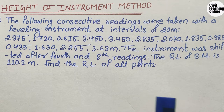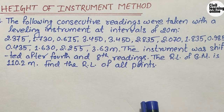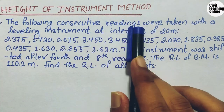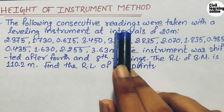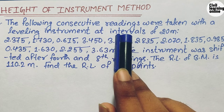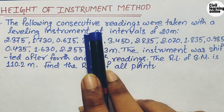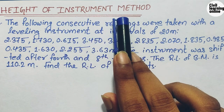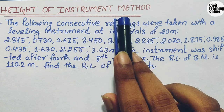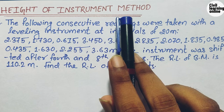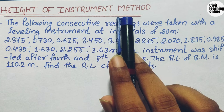Hello viewers, welcome to CV Learning Online. Today in this video I will be solving a numerical based upon the height of instrument method. Previously I have made a video about the rise and fall method. There are basically two methods of performing leveling: the first one is rise and fall method, and the second one is height of instrument method, which is also known as the line of collimation method.